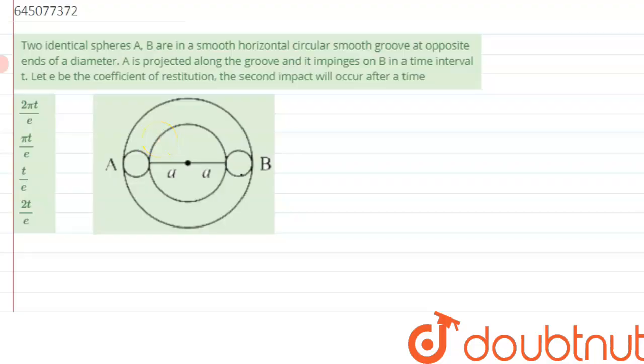We are given a question which says there are two identical spheres A and B in a smooth horizontal circular groove at opposite ends of a diameter. A is projected along the groove and it impinges or collides with B in a time interval t.